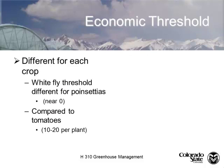Different crops have different economic thresholds, and what this really refers to is what kind of end contact you have for that plant. For instance, if we talk about whiteflies, the whitefly threshold for poinsettias is considerably different than for greenhouse-grown tomatoes. If you're selling the whole plant to a customer, they want that plant to come into their home and not bring in insects that are going to flood around the house.